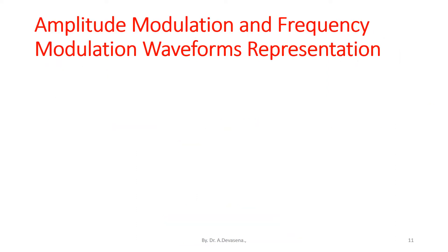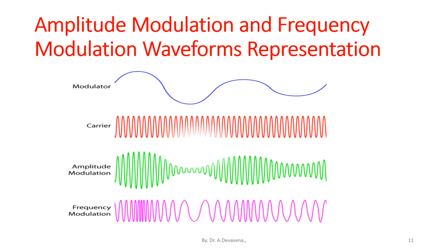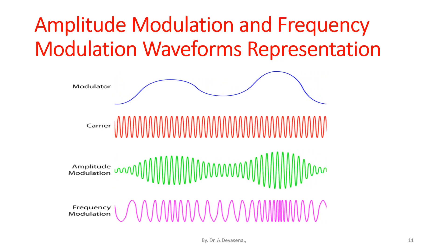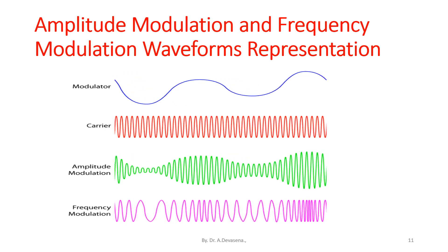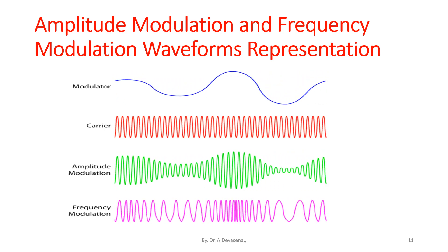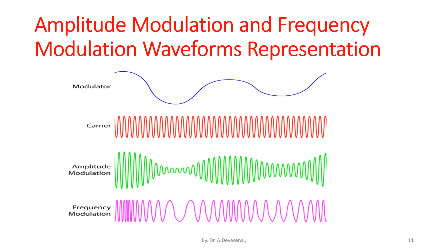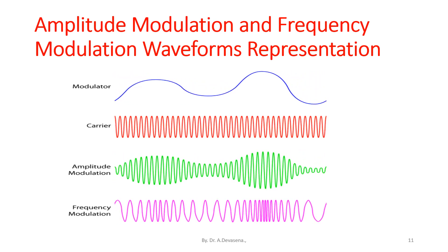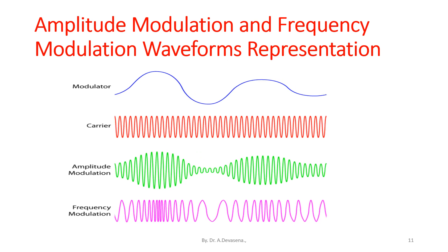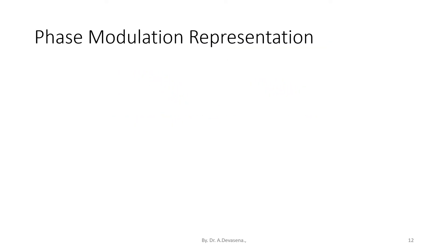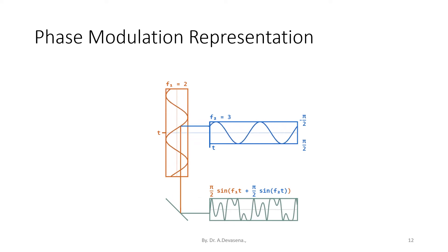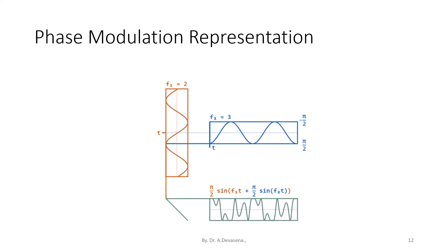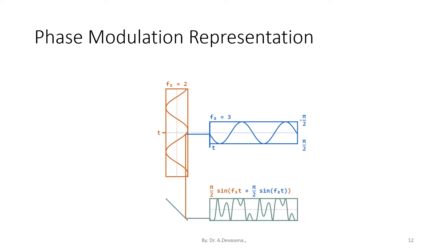Waveform representations of amplitude modulation and frequency modulation are shown here. The diagram shows the carrier wave, the amplitude modulated output wave, and the frequency modulated output wave from the modulator. A phase modulation representation is also shown, in which the phase of the carrier signal is varied.